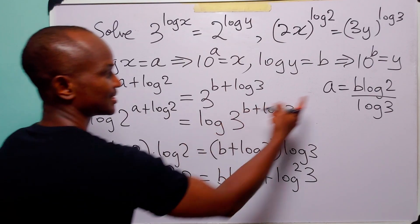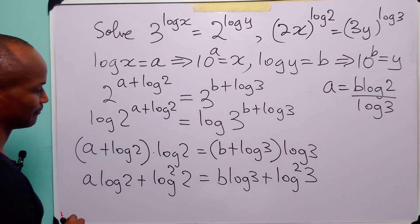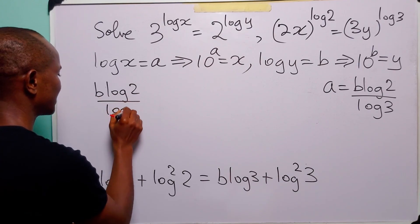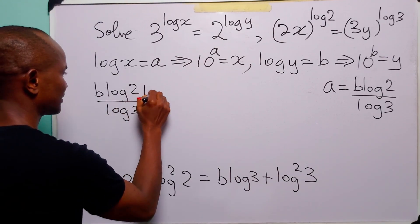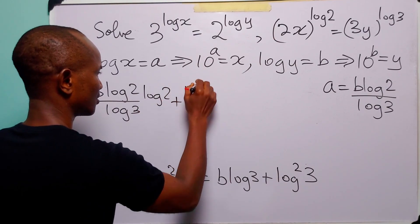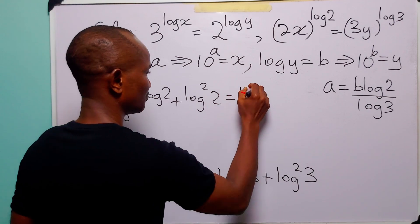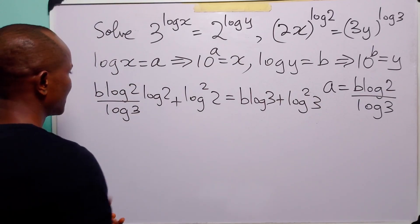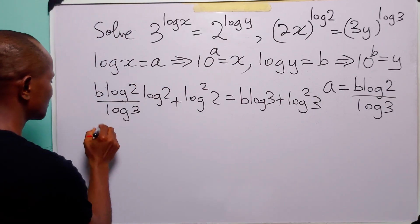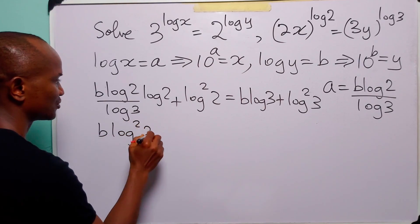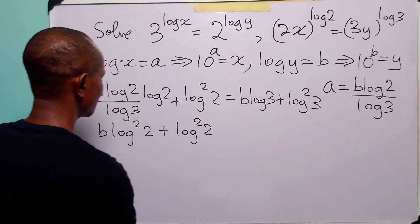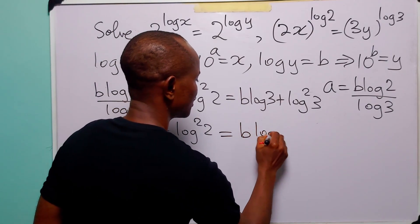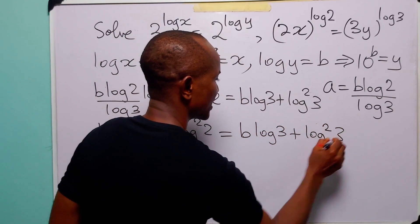Remembering that a equals b·log 2 / log 3, we substitute: (b·log 2 / log 3)·log 2 + log²2 = b·log 3 + log²3. This gives us b·log²2 / log 3 + log²2 = b·log 3 + log²3.